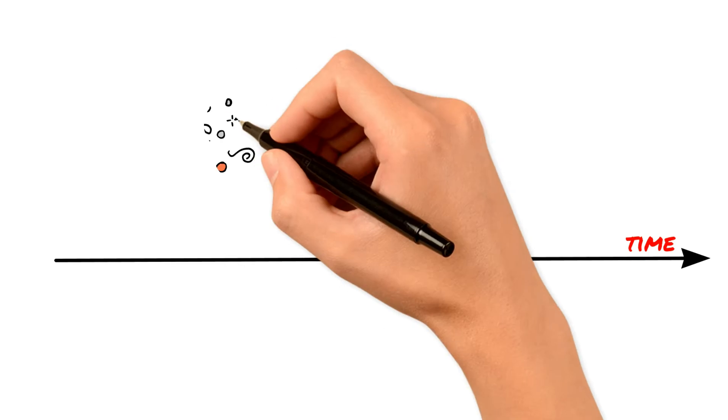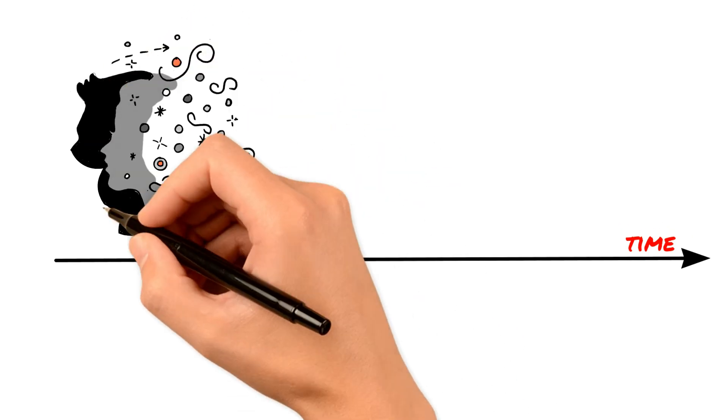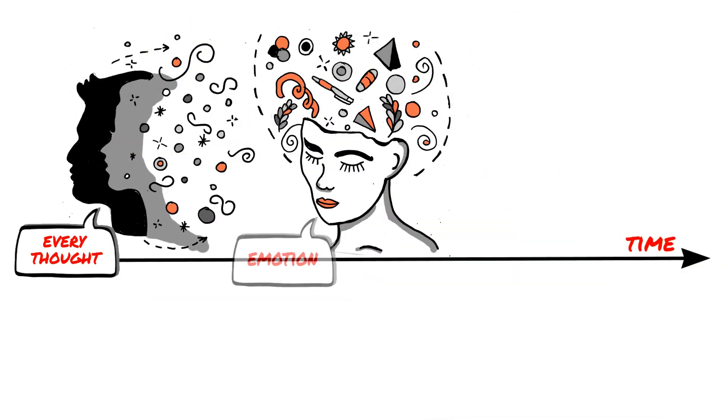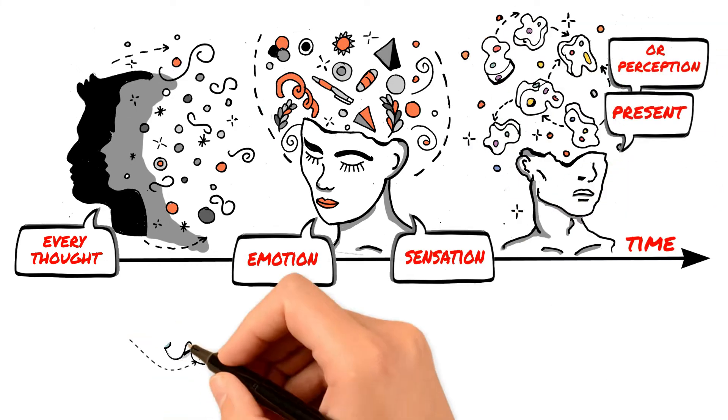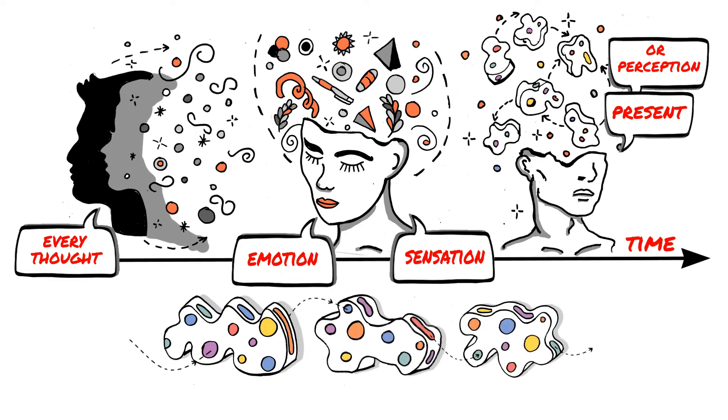Your idea space is uncountable because you cannot count every thought, emotion, sensation or perception present. As soon as you count one, another one appears.